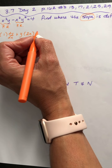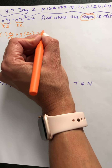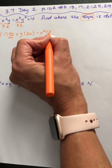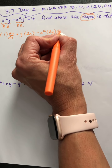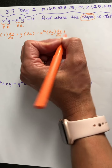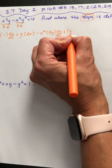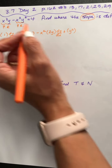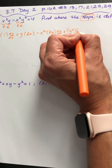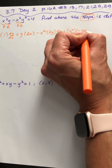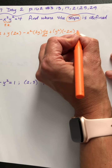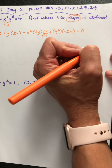We need the first term, which is a negative x squared, times the derivative of the second. The derivative of y squared is 2y, but because it's a y, dy dx. Plus the second term, which is y squared, times the derivative of the first term — negative x squared — so negative 2x. Equals the derivative of 4, which is 0.